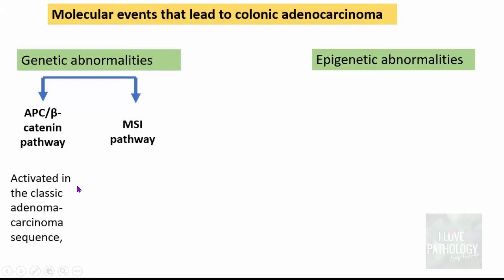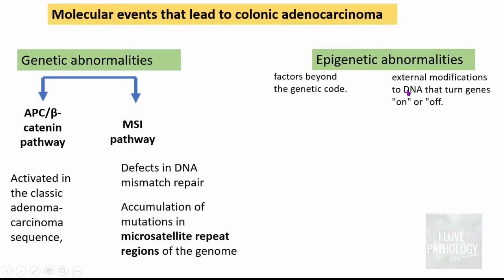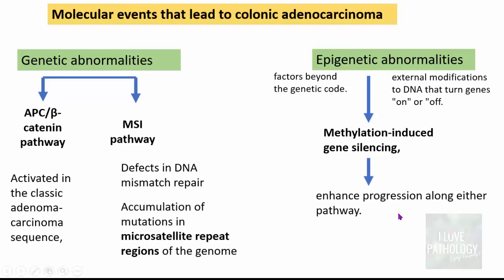The APC or beta-catenin pathway is activated in the classic adenoma-carcinoma sequence, whereas the MSI pathway involves defects in DNA mismatch repair, which leads to accumulation of mutations in the microsatellite repeat regions of the genome. Epigenetic abnormalities are factors beyond the genetic code — external modifications to the DNA that can turn genes on or off. One such external modification is methylation, which can induce gene silencing and enhance progression along either of these pathways.